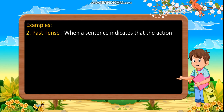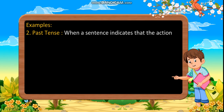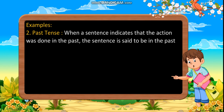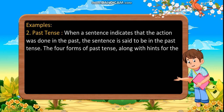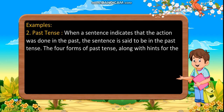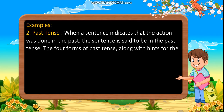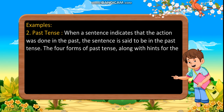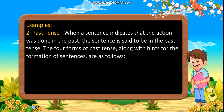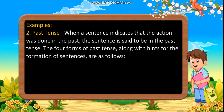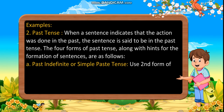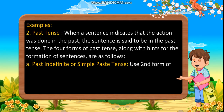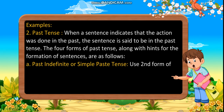Past tense: When a sentence indicates that the action was done in the past, the sentence is said to be in the past tense. The four forms of past tense, along with hints for the formation of sentences, are as follows: past indefinite, or simple past tense.